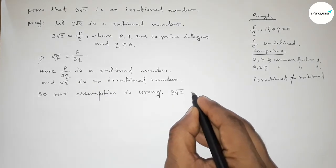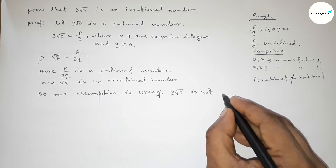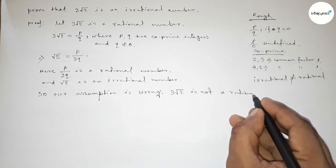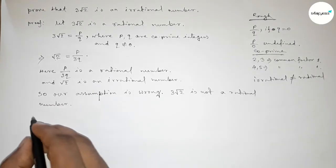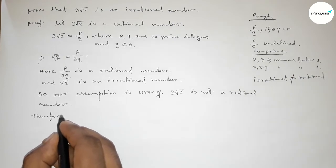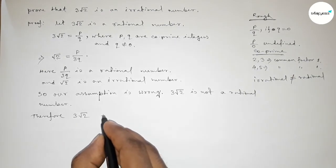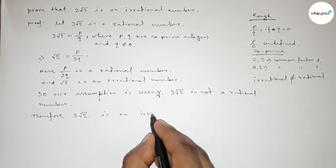Therefore, 3 root 2 is an irrational number. Hence the proof. That's all.